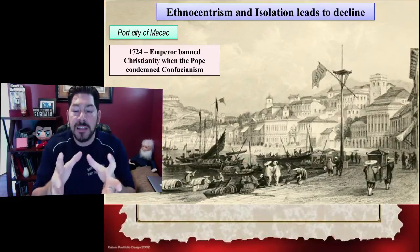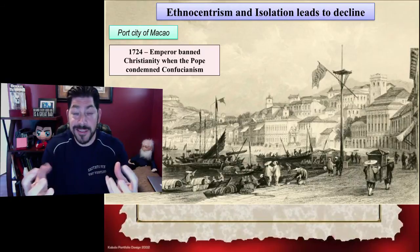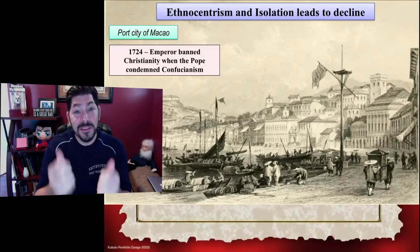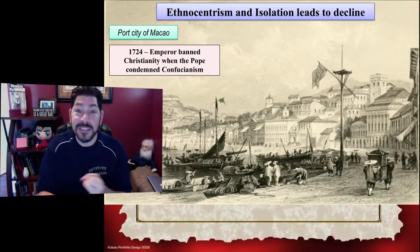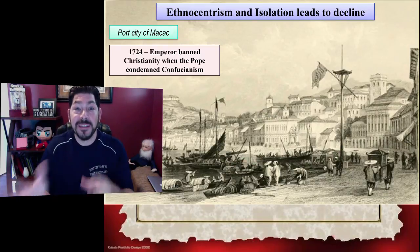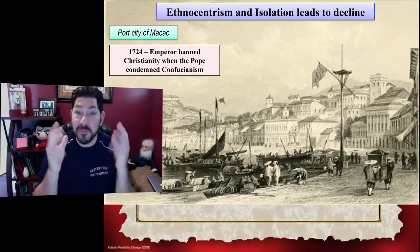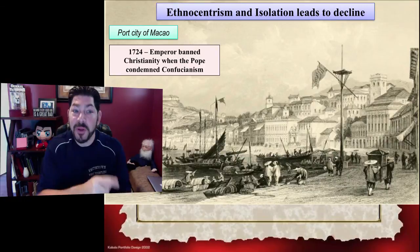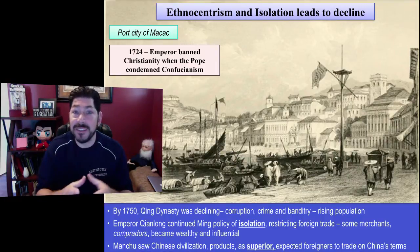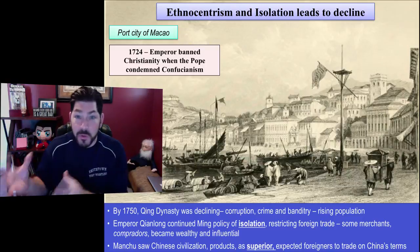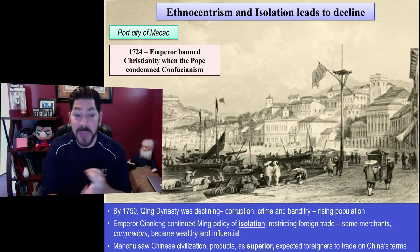The Qing Dynasty was emulating the Ming Dynasty in many ways and having some success. But they also began to emulate them in the same ways that led to the decline of the Ming — ethnocentrism and isolationism — which began again with the Qing Dynasty. In 1724, the emperor actually banned Christianity when the pope condemned Confucianism. And by 1750, the Qing Dynasty was in decline. With a rising population, this led to more corruption, crime, and banditry.